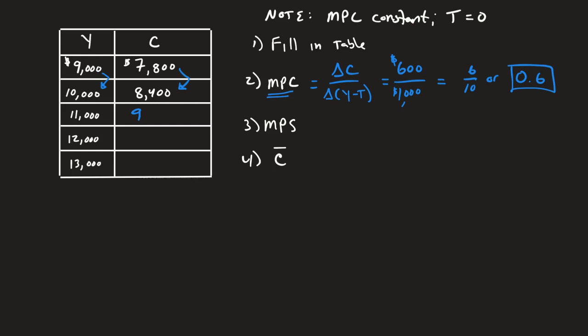So add 600, I'd get $9,000. Then I'd get $9,600. Then I'd get $10,200. So we have filled in the table, check.